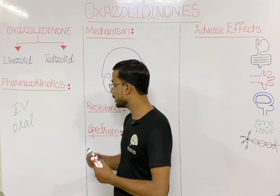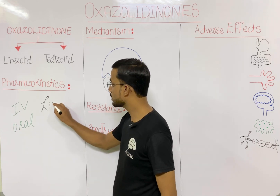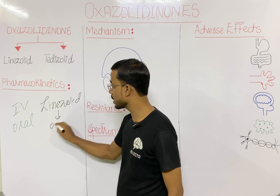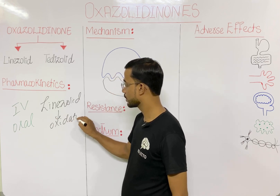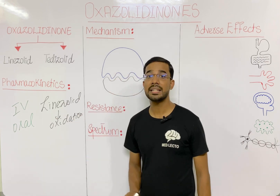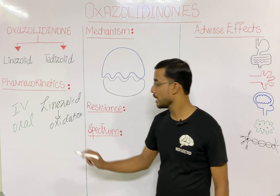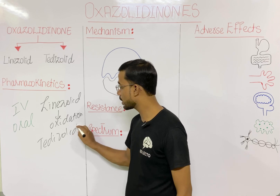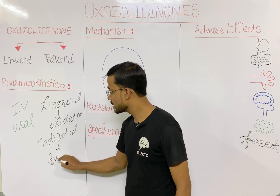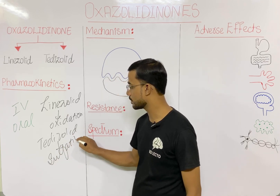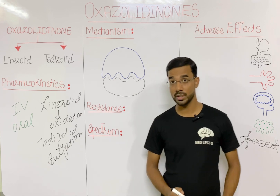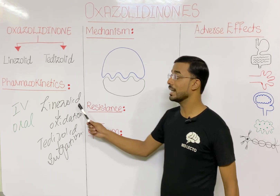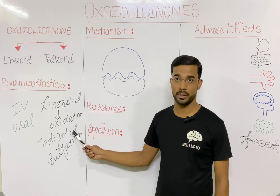There is a difference between the metabolism of linezolid and tedizolid. Linezolid is metabolized through the oxidation process, while tedizolid is metabolized through the sulfation process. That is the important difference between the metabolism of these two drugs.